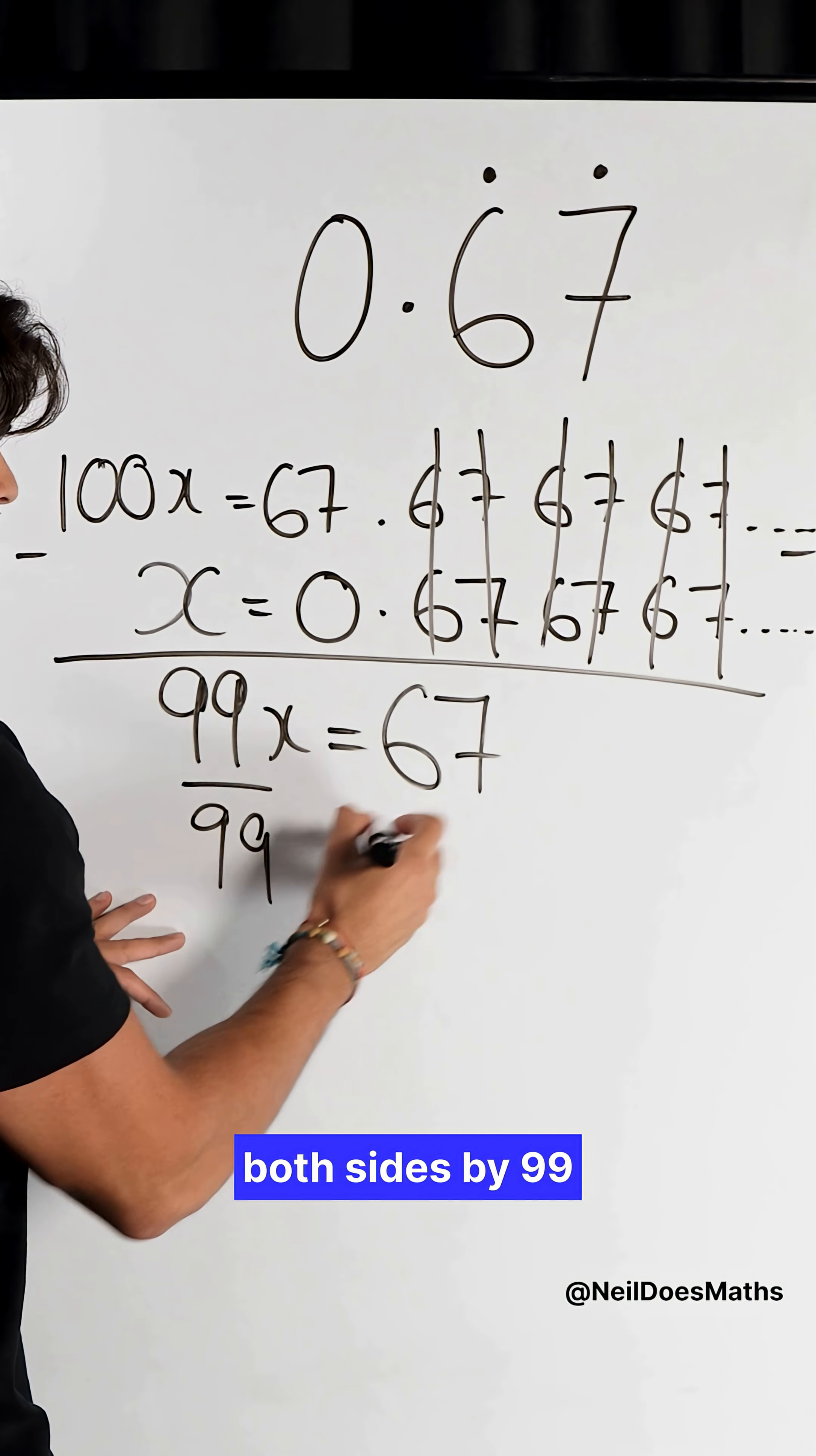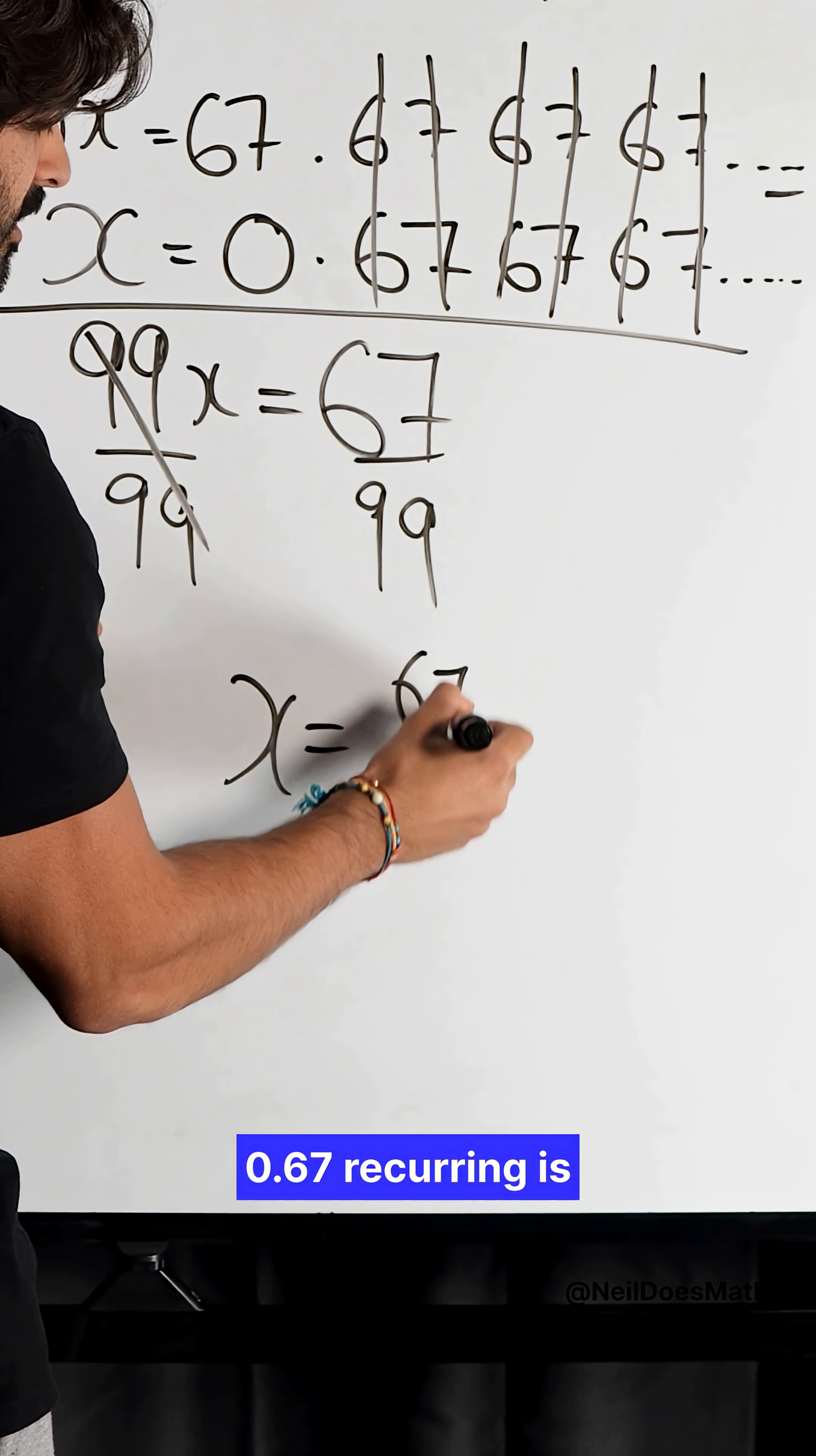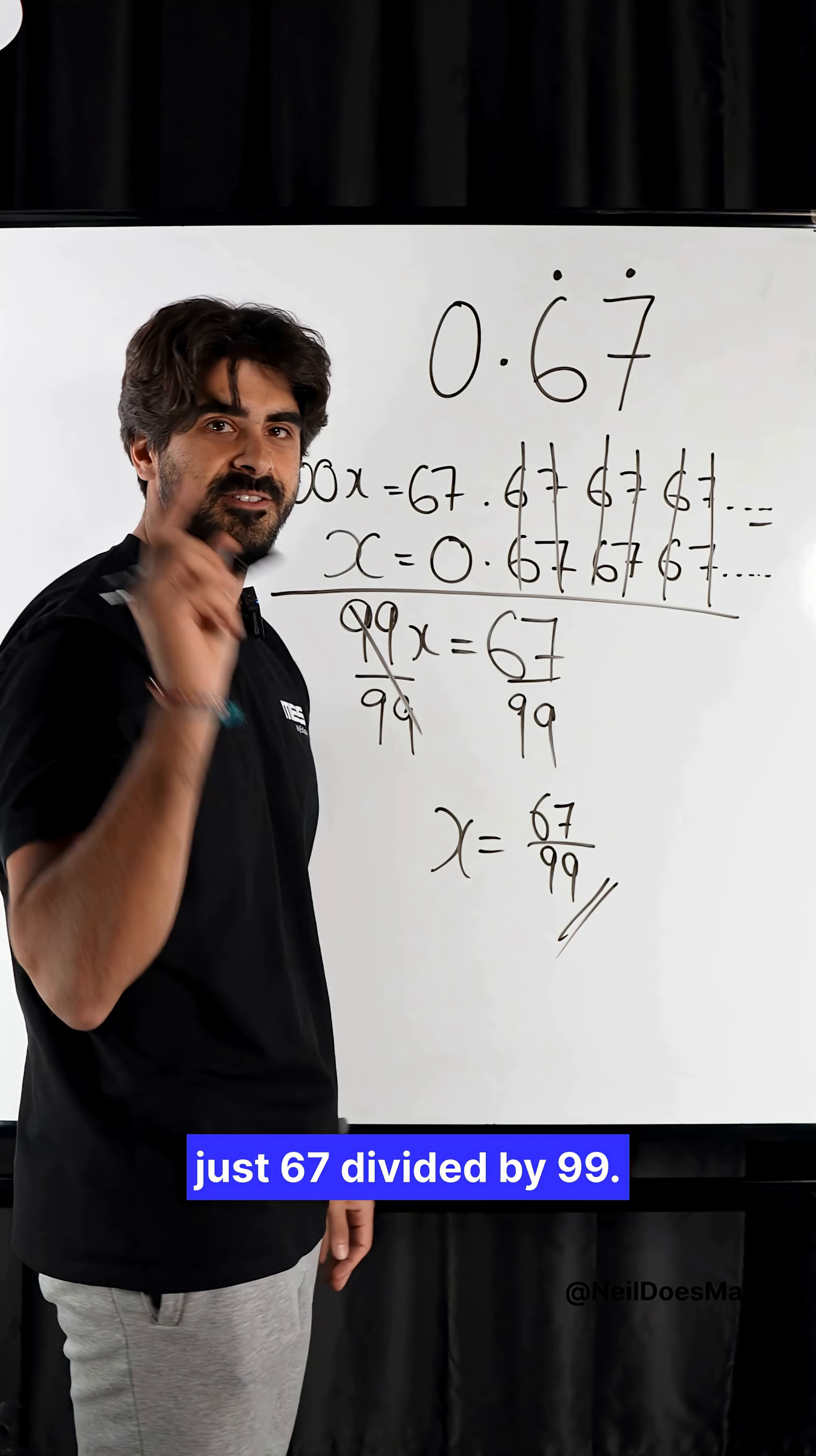Then, we just divide both sides by 99, and there's our answer. 0.67 recurring is just 67 divided by 99. Nice.